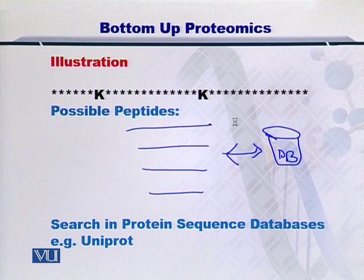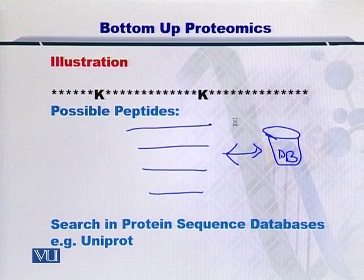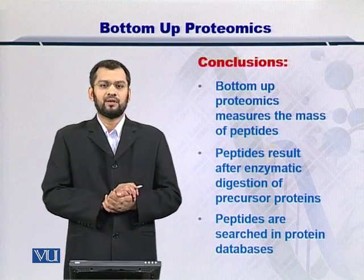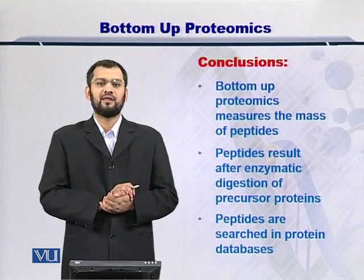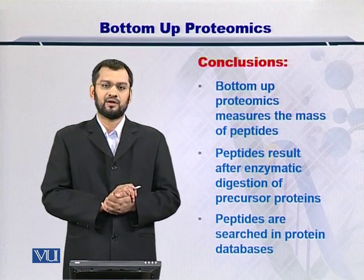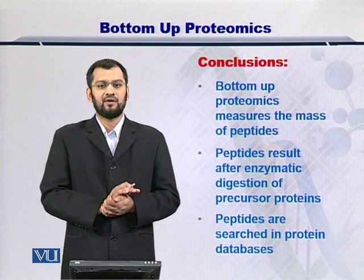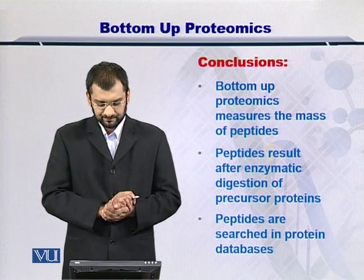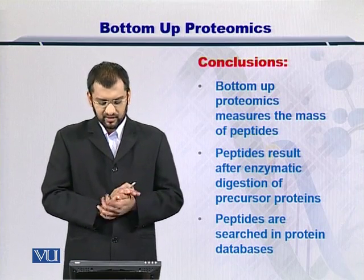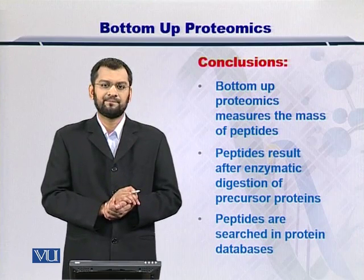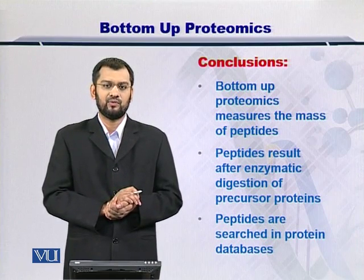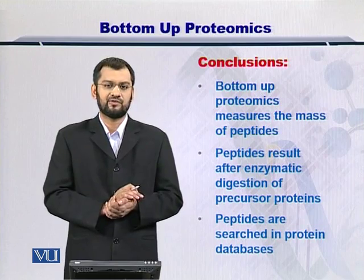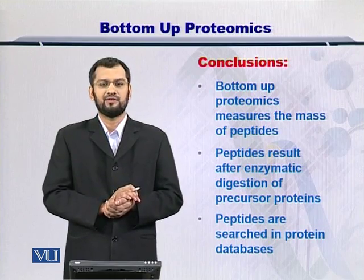These sequence databases can be SwissProt or UniProt or any other protein sequence database of your choice. In conclusion, bottom-up proteomics looks at the enzymatic digestion products — that is, the peptides — and tries to search them from the protein sequence databases. The peptides that result from this match are going to help you identify which precursor protein was there in the sample.